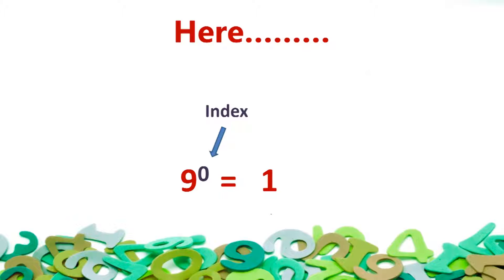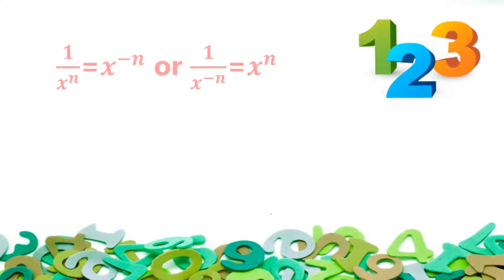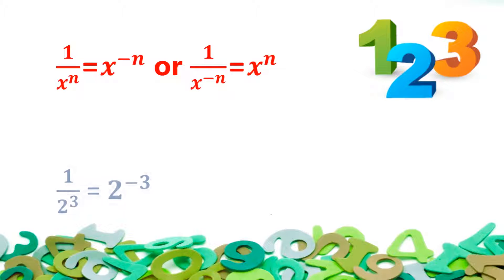Law 2 states: 1 divided by x raised to power n is equal to x raised to power negative n. For example, 1 divided by 2 raised to power 3 is equal to 2 raised to power negative 3.